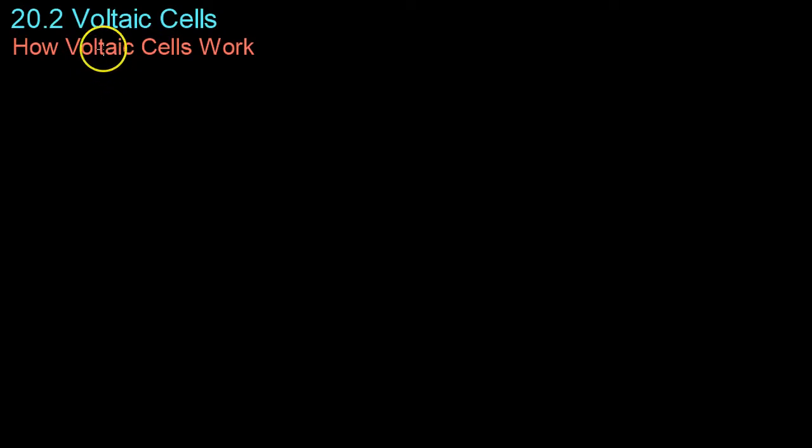This video covers chapter 20, section 2, which deals with voltaic cells. Voltaic cells, as a quick definition, are cells in electrochemistry that use redox reactions to convert chemical energy (E_chem) into electrical energy (E_E).